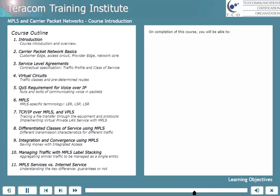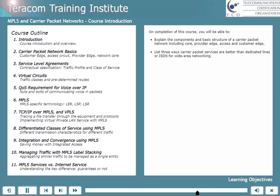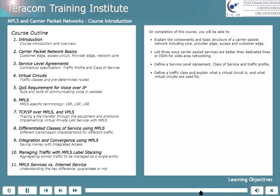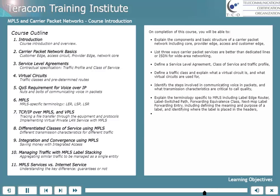On completion of this course, you'll be able to explain the components and basic structure of a carrier packet network, including core, provider edge, access, and customer edge. List three ways carrier packet services are better than dedicated lines or ISDN for wide area networking. Define a service level agreement, class of service, and traffic profile. Define a traffic class and explain what a virtual circuit is and what virtual circuits are used for. You'll be able to identify the steps involved in communicating voice in packets, and what transmission characteristics are critical to call quality.